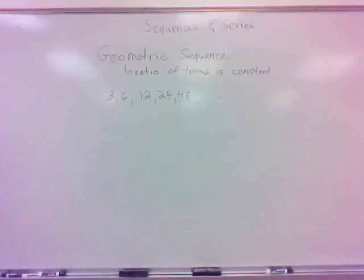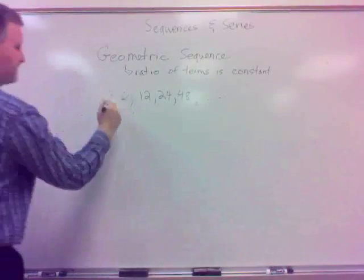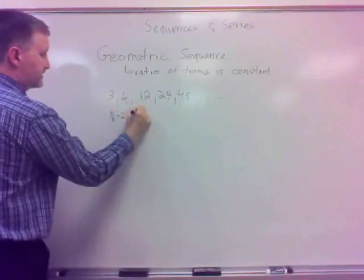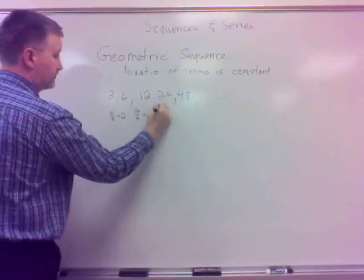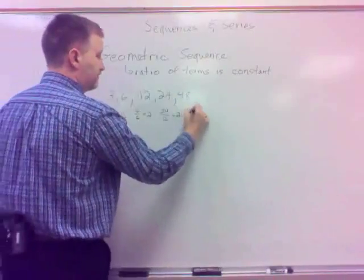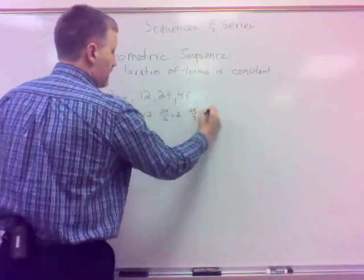I'm looking at the ratio of terms, which - what do I mean by that? Divide the terms. So I take 6 divided by 3, that's 2. 12 divided by 6, that's 2. 24 divided by 12, that's 2, and 48 divided by 24 is 2.